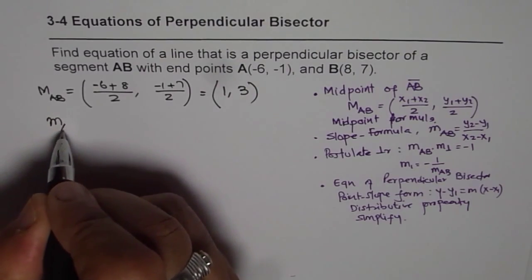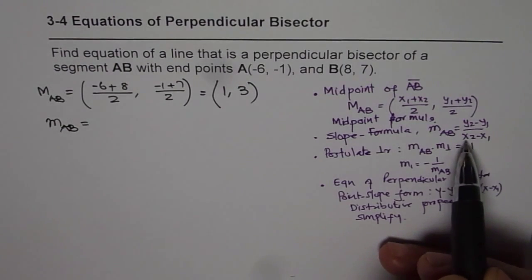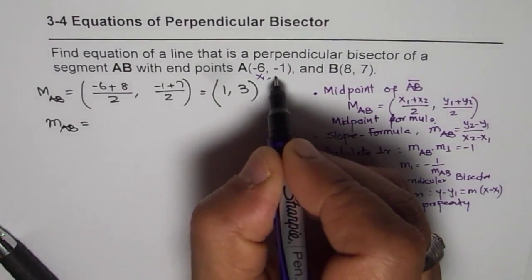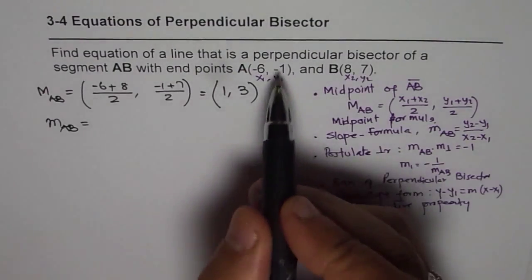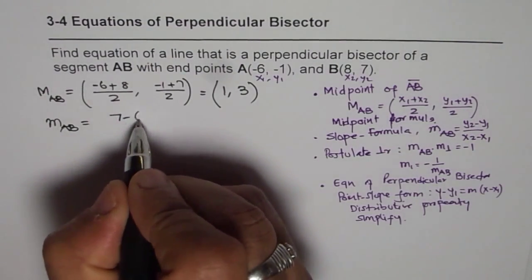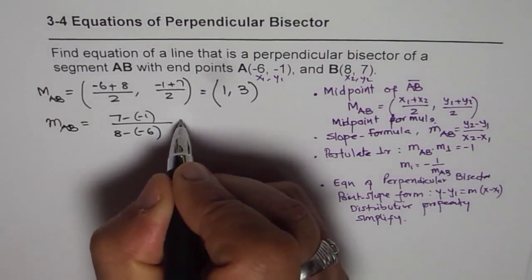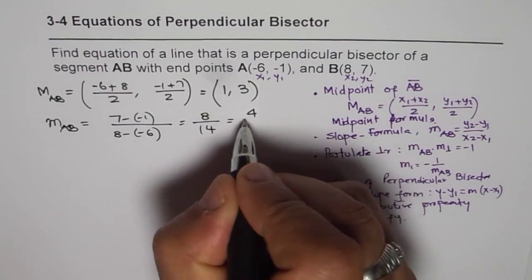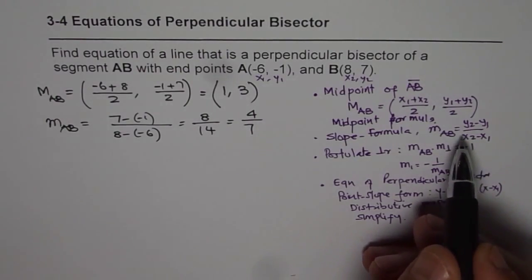And now let us find the slope, m, of AB. So slope is (y2 - y1)/(x2 - x1). And in this case, these are the points. The points given to us are, so this is x1, y1, and this is x2, y2. So we will apply this formula, y2 minus y1, which is 7 - (-1), divided by 8 - (-6), that is 8/14, which can be simplified as 4/7. So we have applied the slope formula and got the slope of the segment AB.